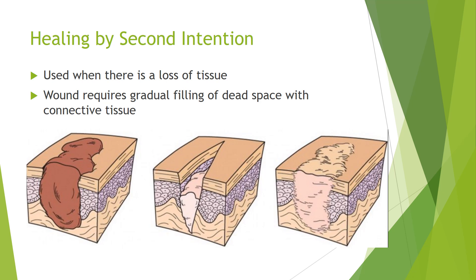Healing by second intention is when there's a bigger loss of tissue. It's not a clean cut as if made by a razor — it could be a gouge, for example. This is when the wound requires gradual filling of the dead space with connective tissue. The edges of the wound are not brought together; instead the wound is left to fill from bottom to top with granulated tissue. As you can see, this leaves a much wider scar than healing by first intention.